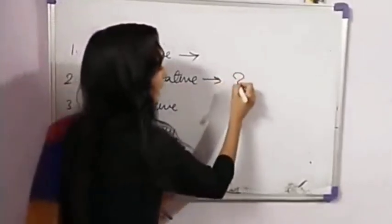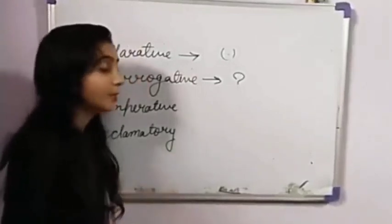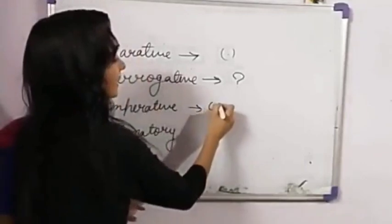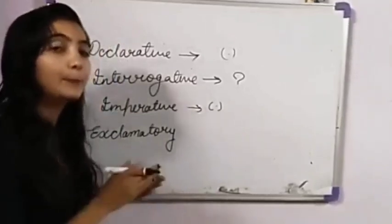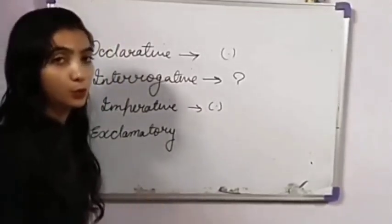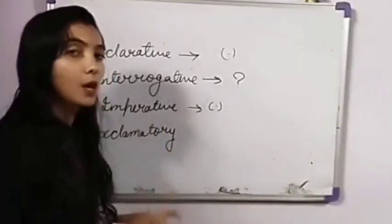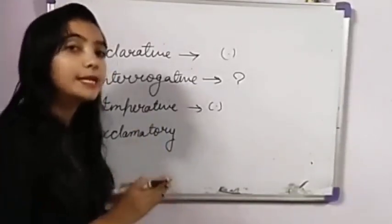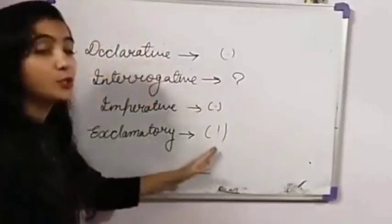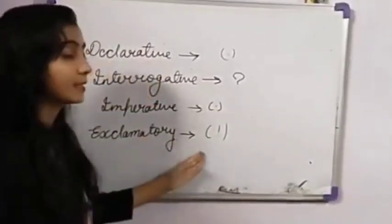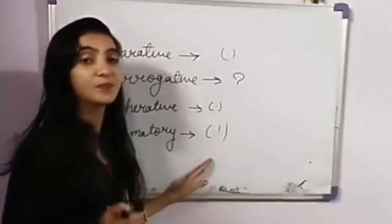Interrogative sentence mein hota hai question mark, aur interrogative sentence shuru hota hai helping verb ke saath. Imperative sentence bhi apne saath leta hai full stop, lekin yeh hote hain chhote sentences. Yeh sentence shuru hota hai — please sing. Like, 'Please give me a glass of water' — mujhe paane ka glass de dijiye. Means request. If there will be any request, then it will start from 'please.' If there is any command or order, you can easily identify that this is an imperative sentence.